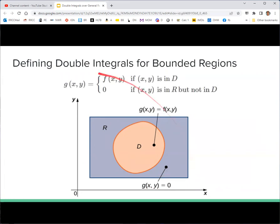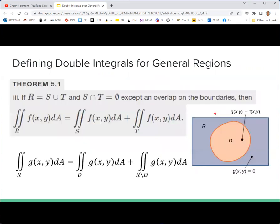So there's the definition of G. It's F inside of D and it's 0 outside of D. Now, using property 3 from Theorem 5.1, if the rectangular region we're integrating over can be broken into a union of two subsets so that the intersection is the empty set except for the boundary, then we can break the double integral of the rectangle up into the double integral of those two sets. Well, that's exactly what we have here.